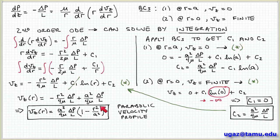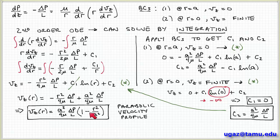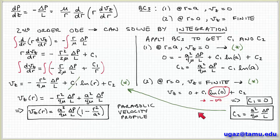We can check that this satisfies the boundary conditions. At the wall, r equals a: substituting in gives 1 minus 1 equals zero, so the velocity is zero at the wall. At the centerline, r equals zero: substituting in gives the velocity at the centerline equals a squared delta p over 4mu L. It doesn't diverge or go to minus infinity. So this gives us a valid expression for the velocity profile in the pipe.